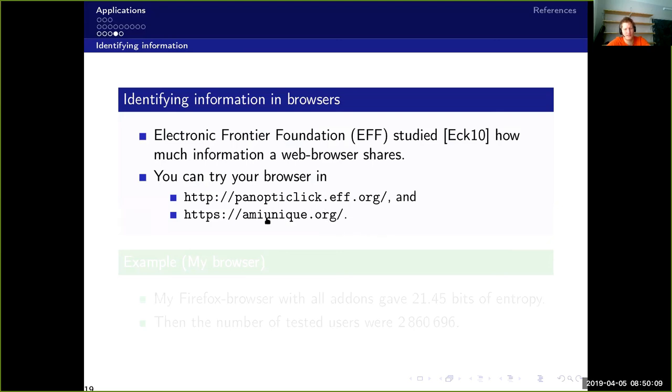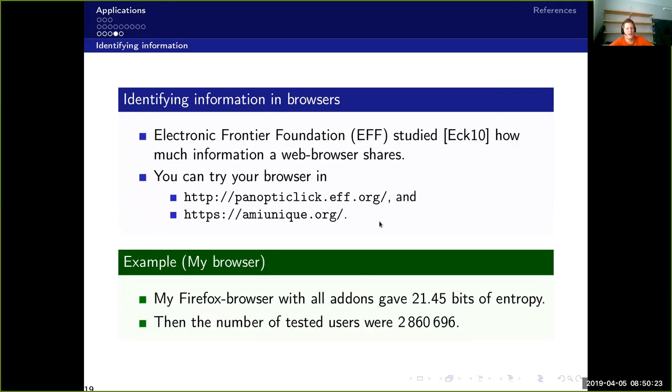And there is also another service called Am I Unique, which is run by another research team who does research on browser fingerprinting. So you should try both of these and see how well you do. I ran this with my browser. I think this was like the first or second generation of Panopticlick. I think they are in the third generation of Panopticlick now. And when I did this test with all add-ons that I had, which are privacy enhancing add-ons, then it gave me 21.45 bits of entropy. So that's not that far from the 34 bits of entropy that we actually needed to uniquely identify every individual on earth. And by that time they had tested 2.8 million users. So you should see how well you do.